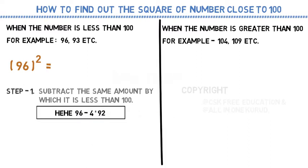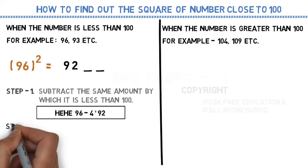These are the initial digits of our answer. I have written 2 spaces. You might be confused why? Because 96 is close to 100, the base is 100, so we will have 2 more digits after initial digits.